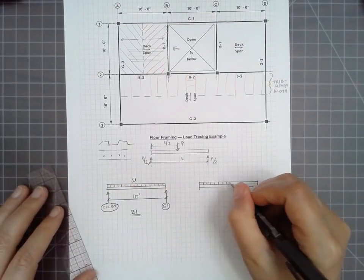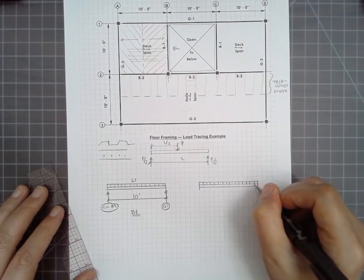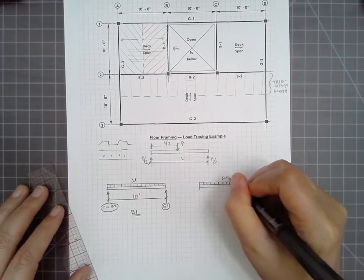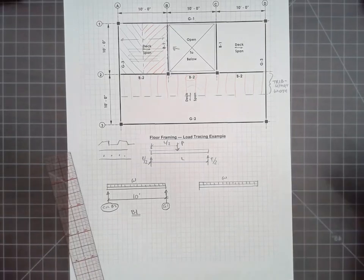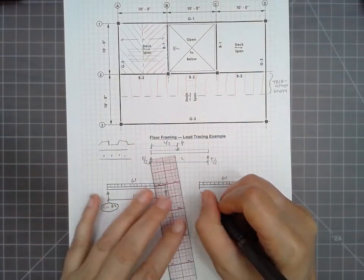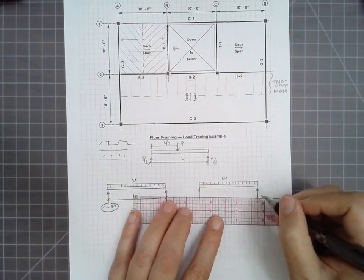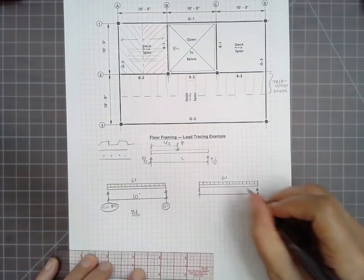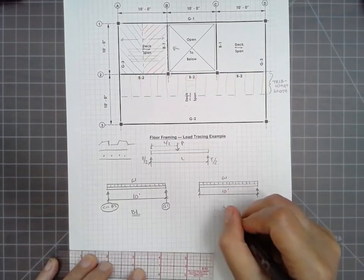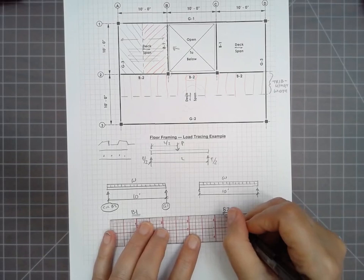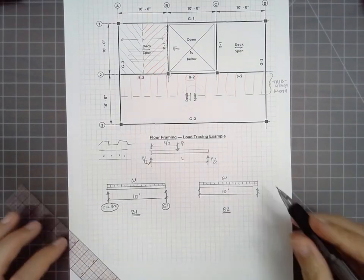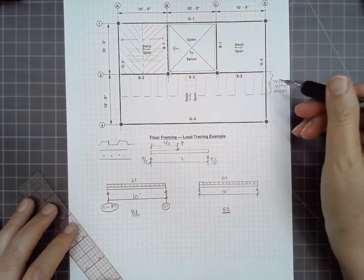So this is the symbol that we use for uniform load. Again, it's a magnitude W. We don't know what it is without doing any calculation on it, but we can still do this diagram. And we see that this also is 10 feet long. And this is our element B2. However, its supports are different. It depends on which B2 we're talking about.